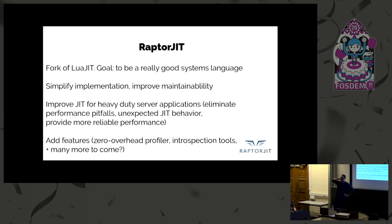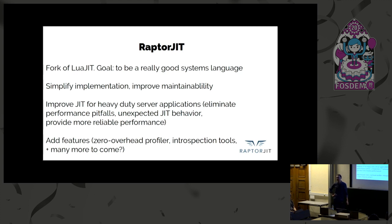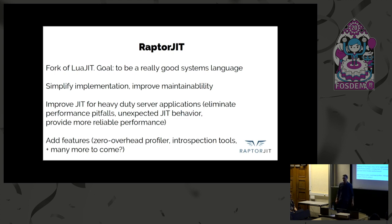Reptijit is a fork of LuaJIT and its goal is to be a really good systems programming language. With Reptijit we want to do a couple of things: first, we want to simplify the implementation and improve maintainability. We also want to improve the compiler for heavy-duty server applications specifically. We have a very narrow use case — we want to write systems applications, and we think we can improve the compiler even more by targeting this narrowed use case.